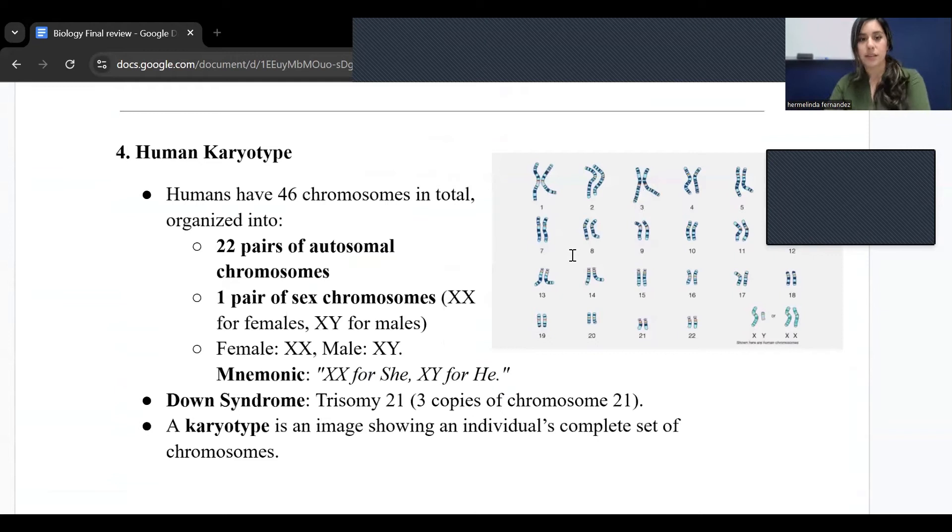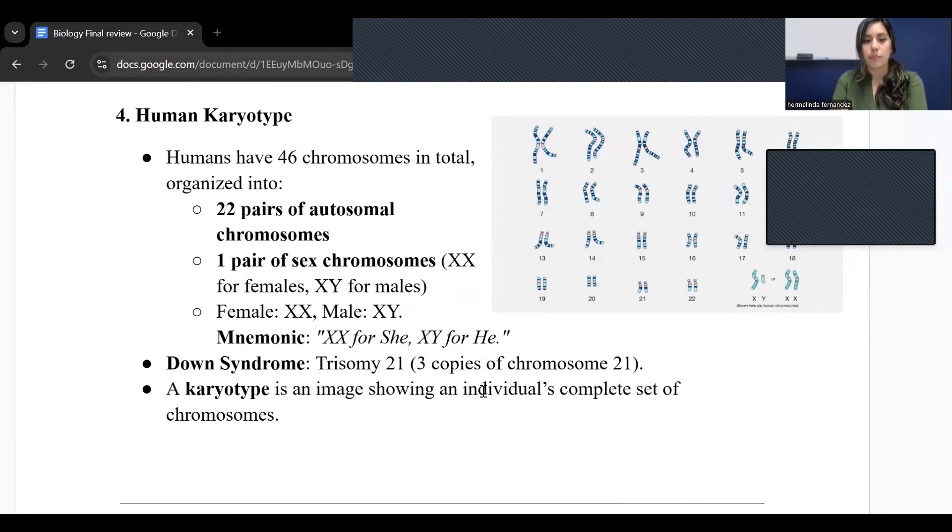Human karyotypes. So karyotyping, when we think of that, think about an X-ray that shows images of your chromosomes. Humans have 46 chromosomes in total. This goes to 22 pairs of autosomal chromosomes and one pair of sex chromosomes. For females it will be XX and for males it would be XY. An easy mnemonic to think of this is XX for she and XY for he. Another key thing to remember is that Down syndrome is trisomy 21, so there's three copies of that chromosome 21.